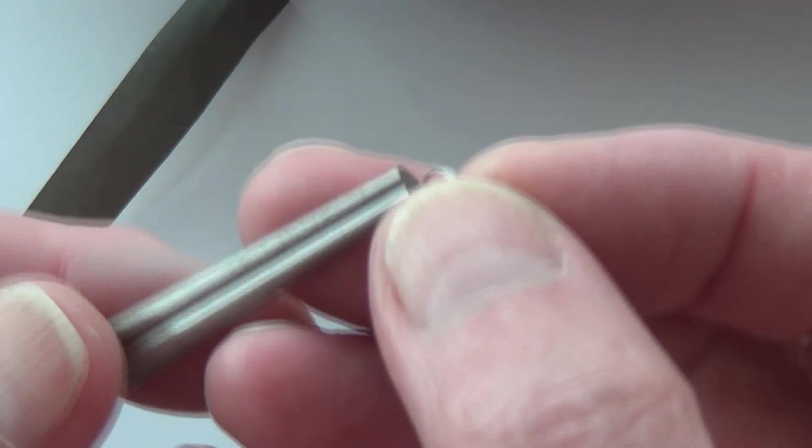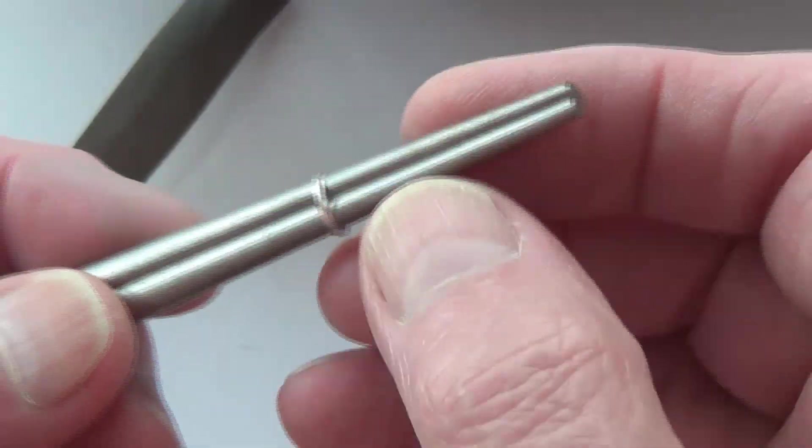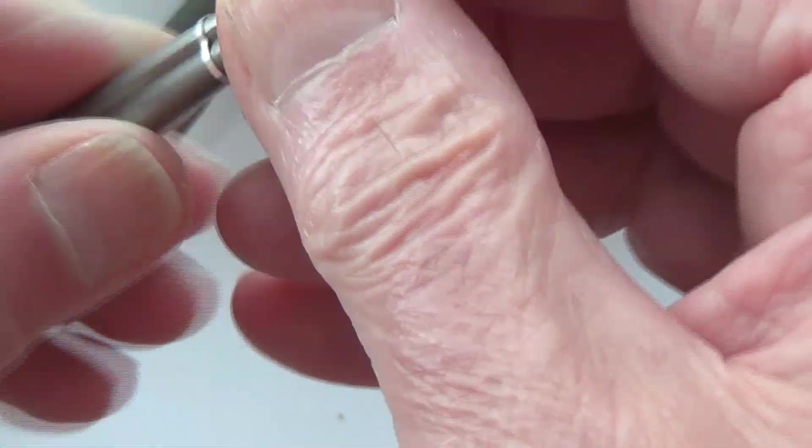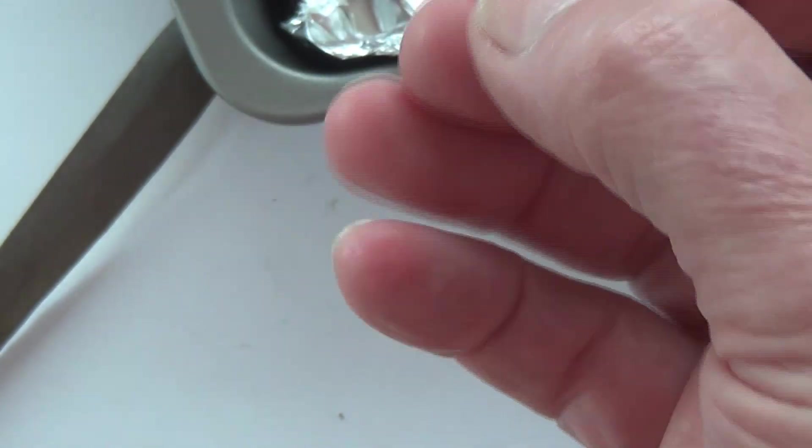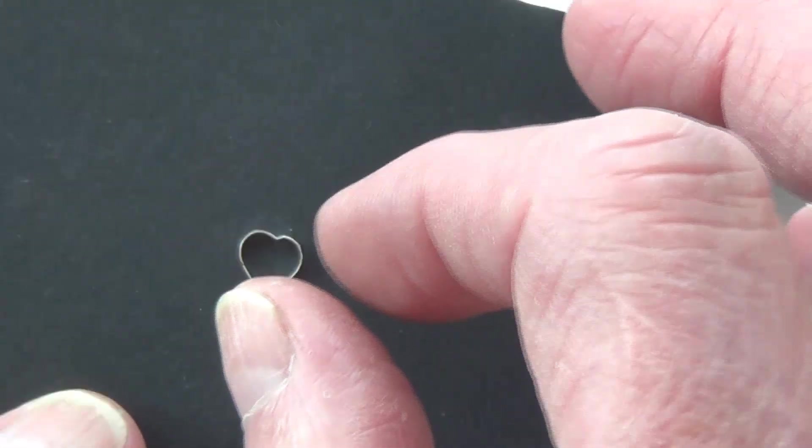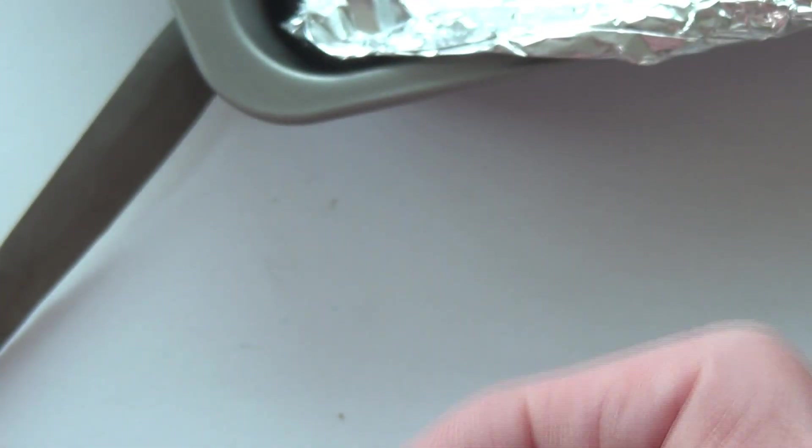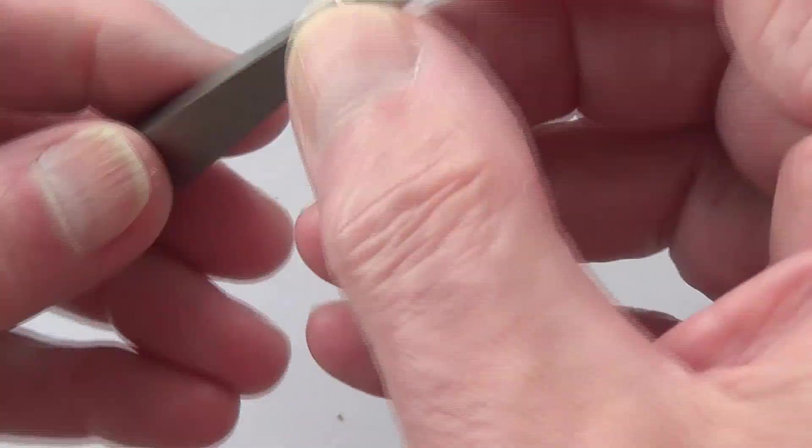If you want to change the shape of it, I've got these little mandrels. That fuse joint is so strong it doesn't matter where you bend it. It's not soldering, it's actually fusing. You can make it into a heart or square using different mandrels.